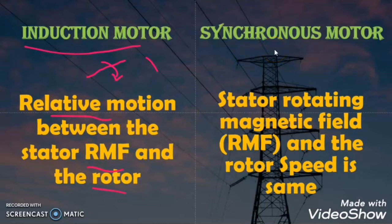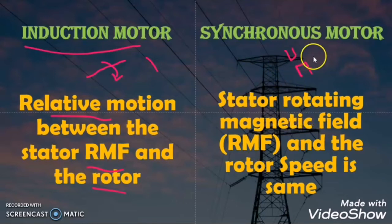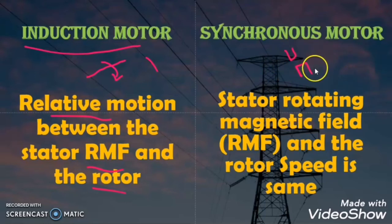But in the synchronous motor, once the magnetic locking is done between the stator RMF and the rotor poles, there is no relative motion between the rotor and the RMF. The pole of the RMF and the pole of the rotor get locked with each other, and the rotor follows the same synchronous speed as the RMF.